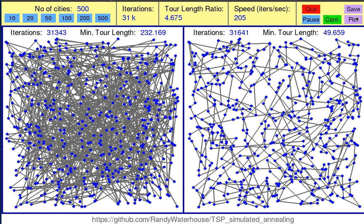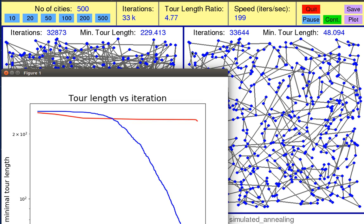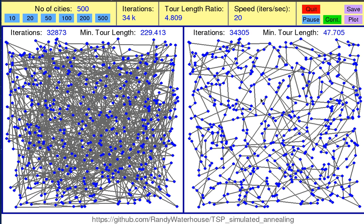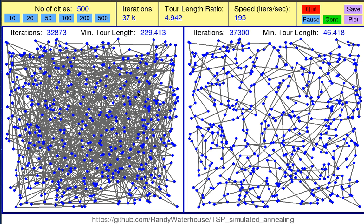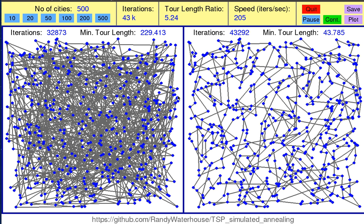You can also just briefly check the plot now for the 500 cities. And we see that the simulated annealing method neatly improves the solution. So much for this short intro. I hope you like the code and download it, run it, and modify it. Have fun with it. Thank you.